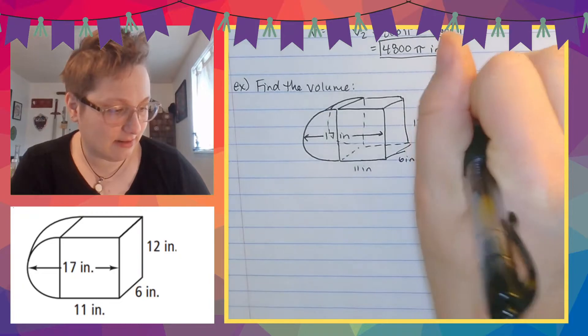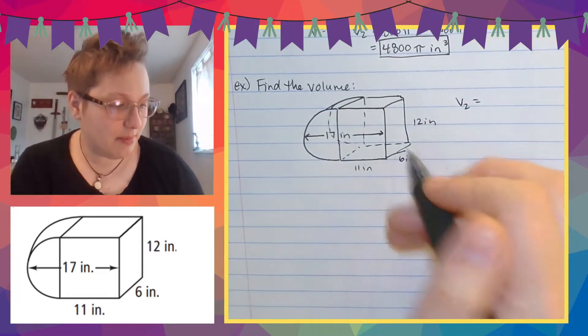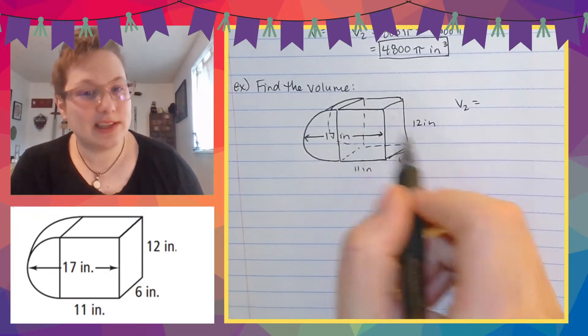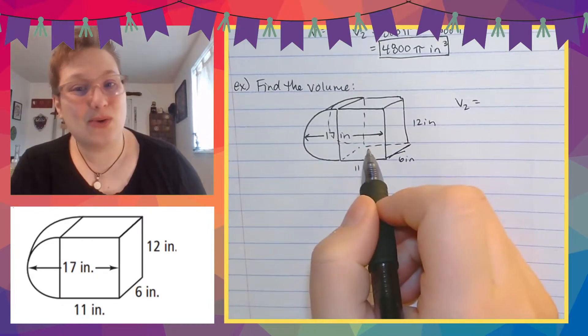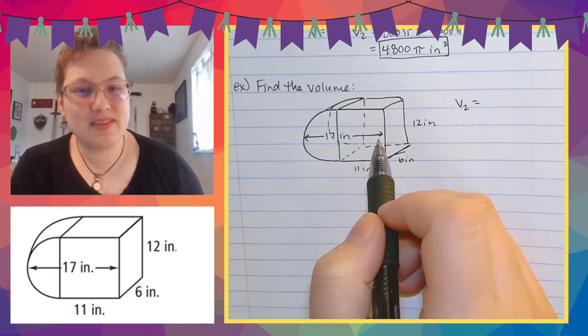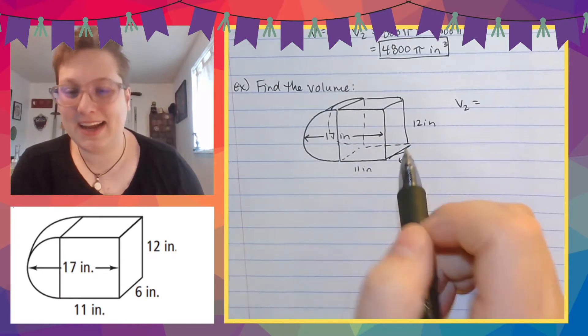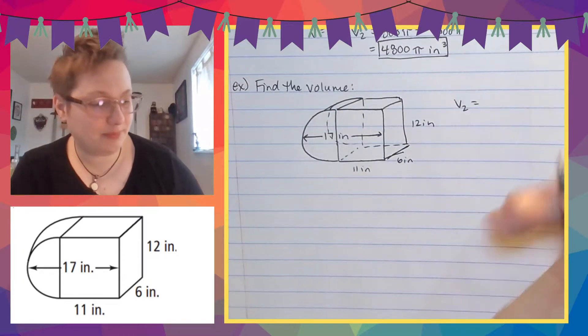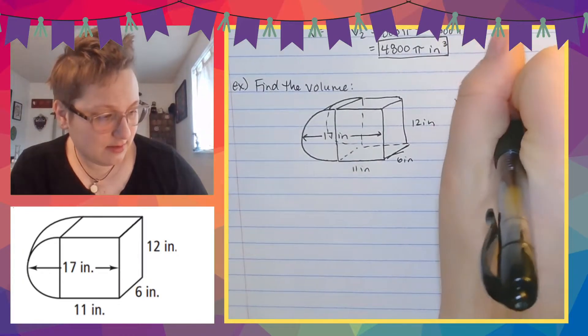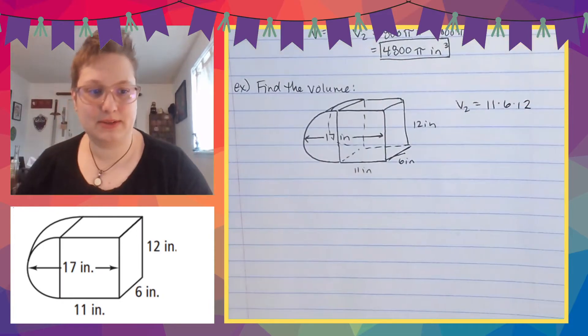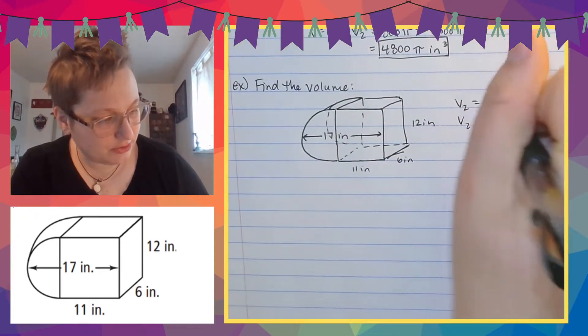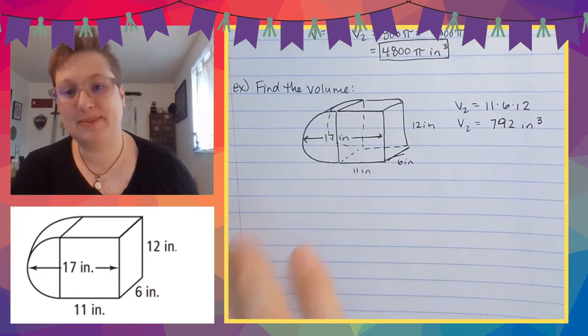So we're going to say the second volume. Well, it doesn't matter how we look at this. It could be this is the base and this is the height, or this is the base and this is the height, or even this is the base and this is the height. I don't care. But no matter what I do, I'm going to do 11 times six times 12. And I get, hold on, it's 792 cubic inches. So that's done. I did it.